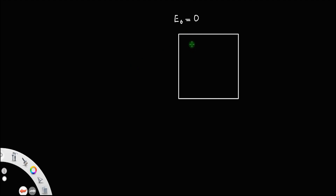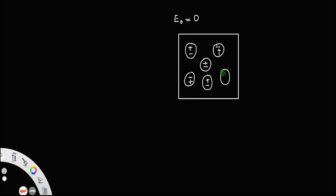In that case, the molecules will be like this — the center of mass of the positive charge coincides with the center of mass of the negative charge, so that the dipole moment of the individual molecule itself is 0. Let us consider 6 such molecules for our convenience.